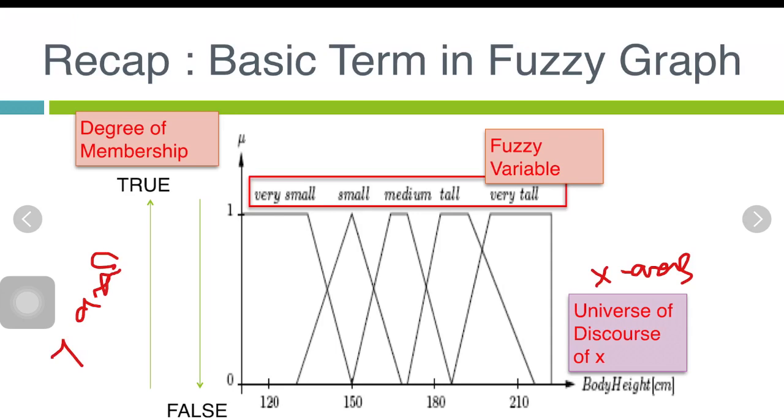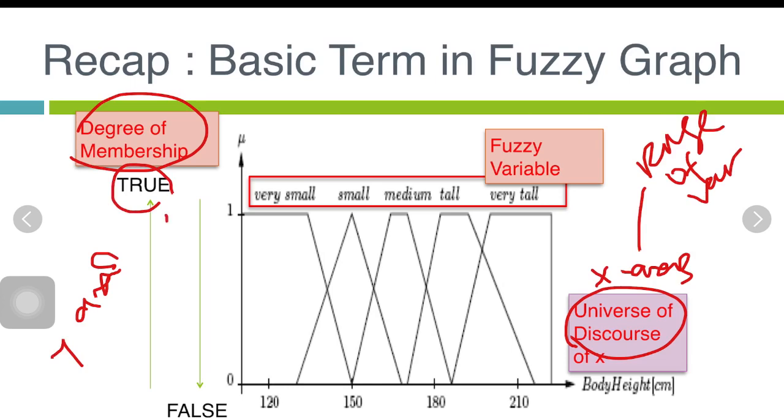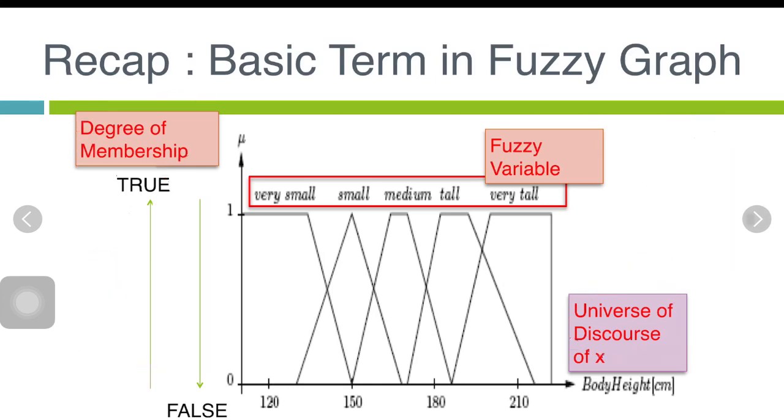The x-axis represents the universe of discourse of a variable, or we can say this as the range of variable. The y-axis is the degree of membership or the degree of truth from completely true to completely false.